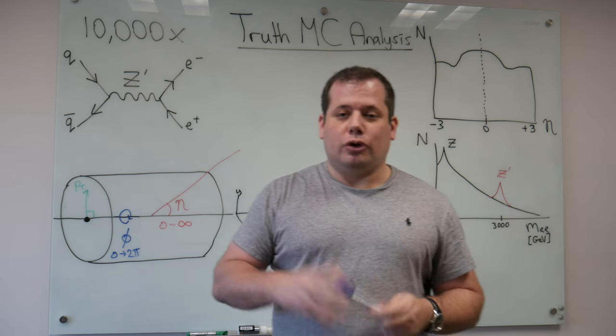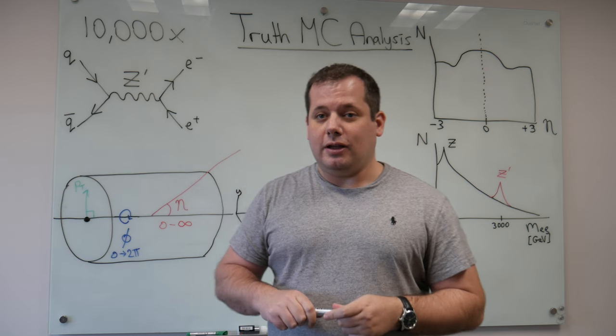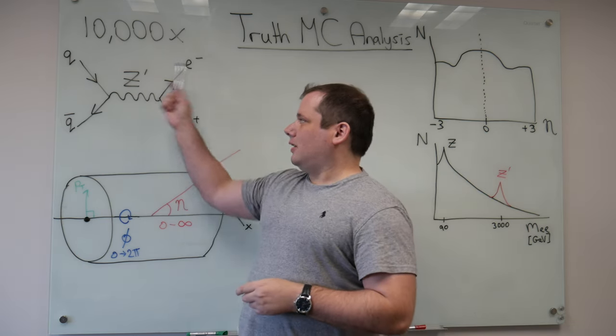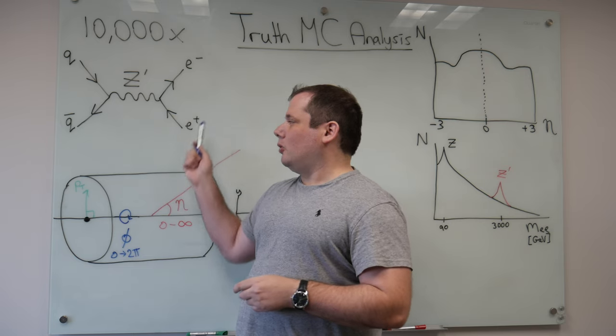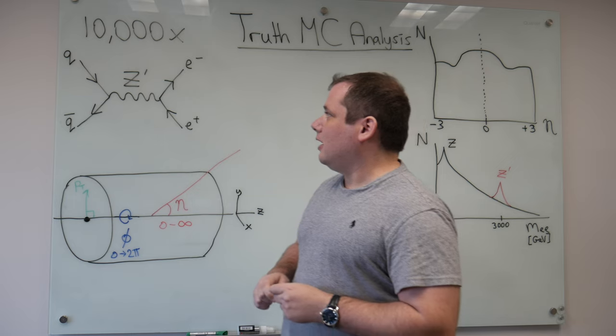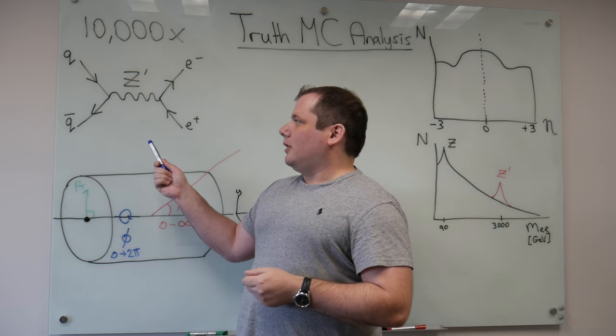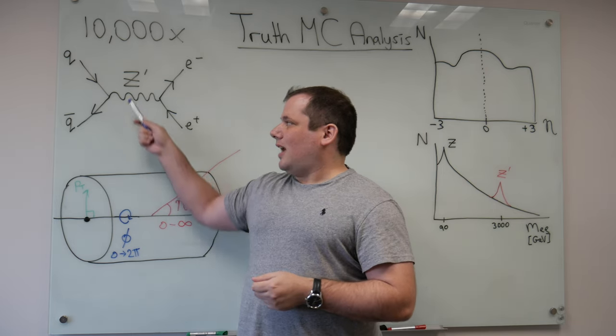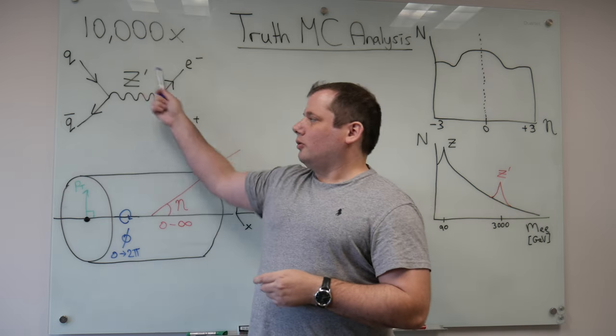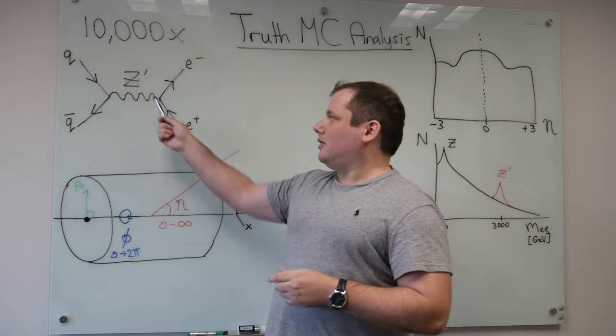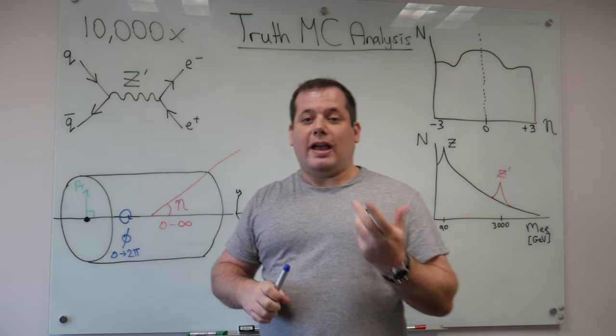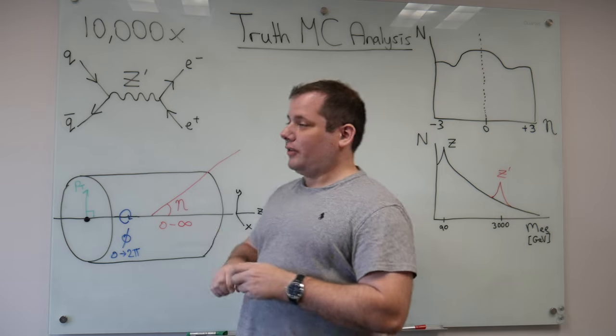So this section is the so-called truth Monte Carlo analysis section. As mentioned, this is the process that you are generating with the generator. And essentially what you told the generator to do was generate 10,000 proton-proton collisions, all of which result in a Z' and then subsequently decayed to electrons. So you now have a sample containing 10,000 of these events.